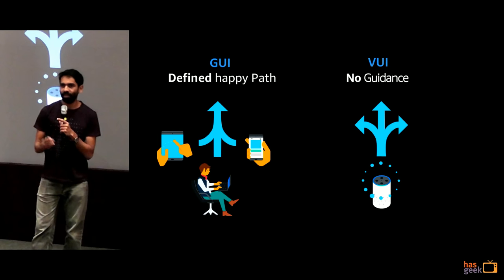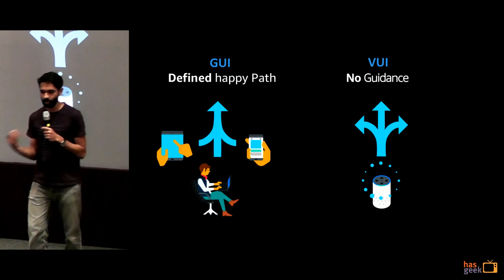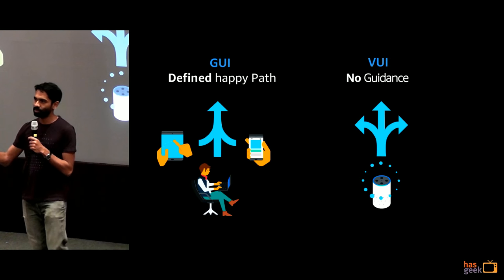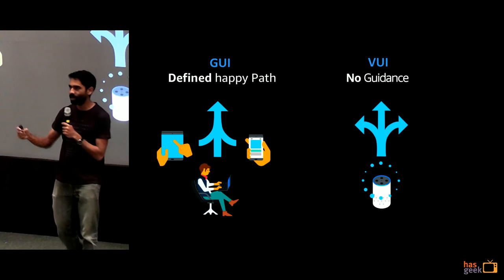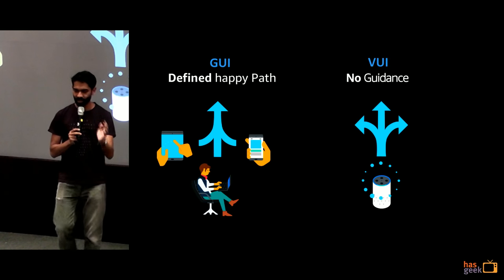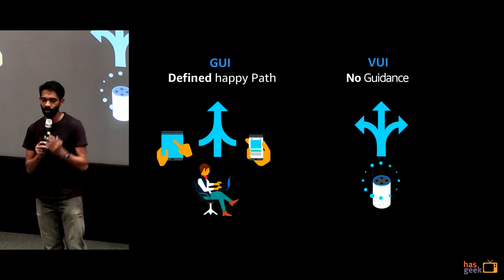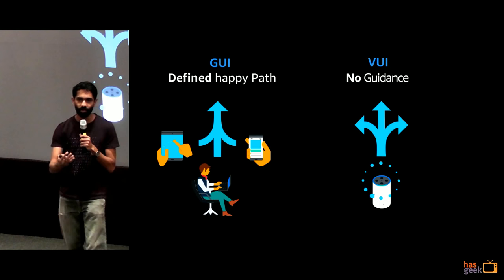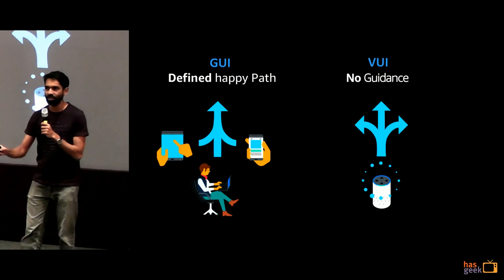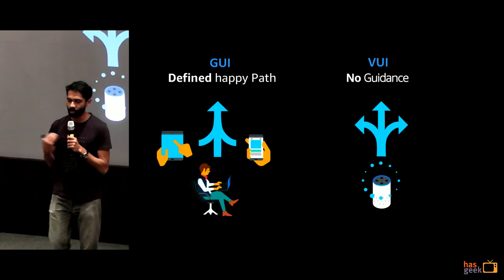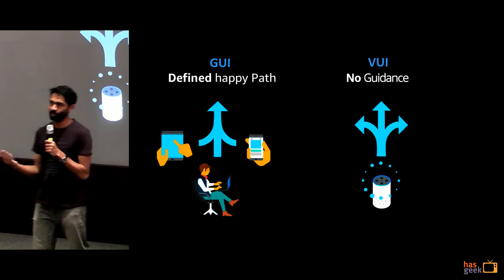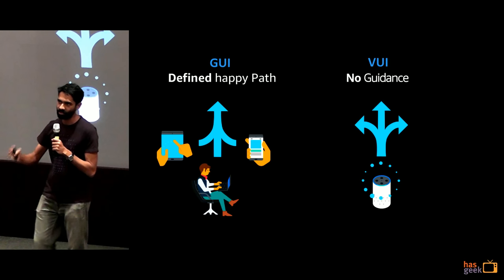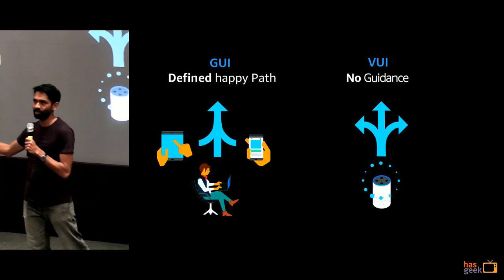With GUI there's a defined happy path. If I go to Amazon or Flipkart, I know which buttons lead to a buy page. If I go to a travel website, I enter my destination, personal details, then pay. I can't do much outside what the website provides — there are buttons, menus, a search bar, and that's it. There's a defined happy path to do something.